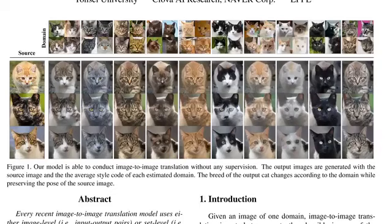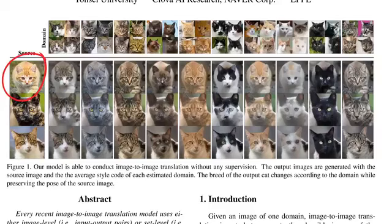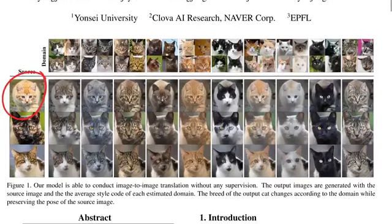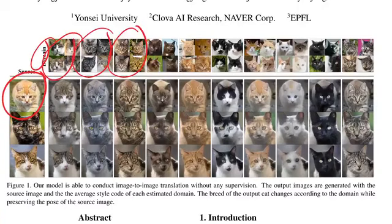What we're seeing here is an example of image-to-image translation, a sort of style transfer. On the left is a source image. The goal is to translate this source image to a different domain while keeping the features of the image the same — we keep the pose of the cat the same but want to change its style, meaning its breed. At the top you can see domain images coming in different groups, and the entire dataset is split into these different groups. Among these different groups there is some shared style.